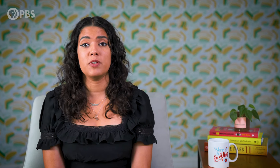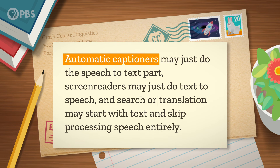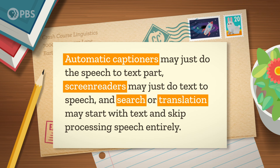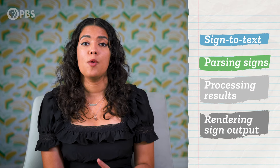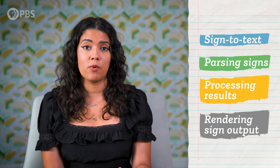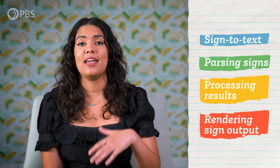Tools that perform just one or two of these subtasks can also be useful by themselves. Automatic captioners may just do the speech-to-text part, screen readers may just do text-to-speech, and search or translation may start with text and skip processing speech entirely. A similar set of steps could work for signed languages too, although this technology is very underdeveloped compared to what's been created for a few big spoken languages. That could be something like signed-to-text, parsing signs, processing the results for a computer to work with, and rendering the output back into signs.